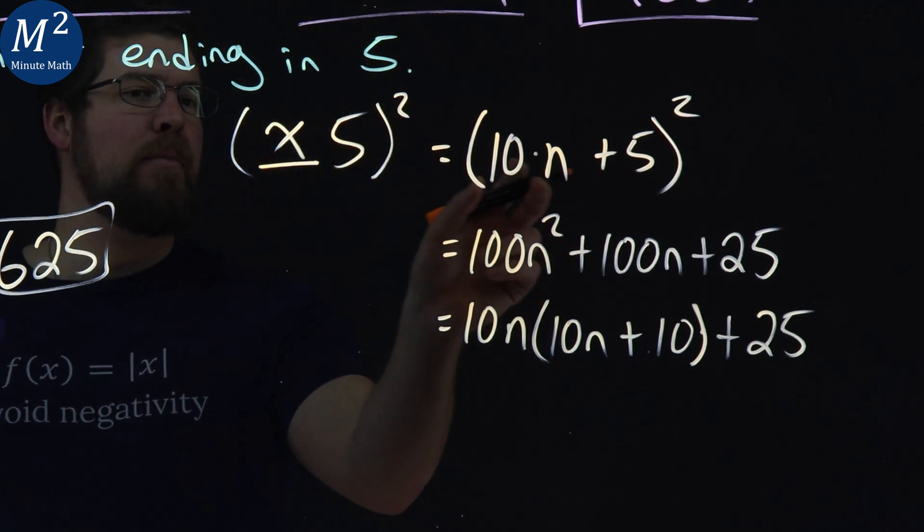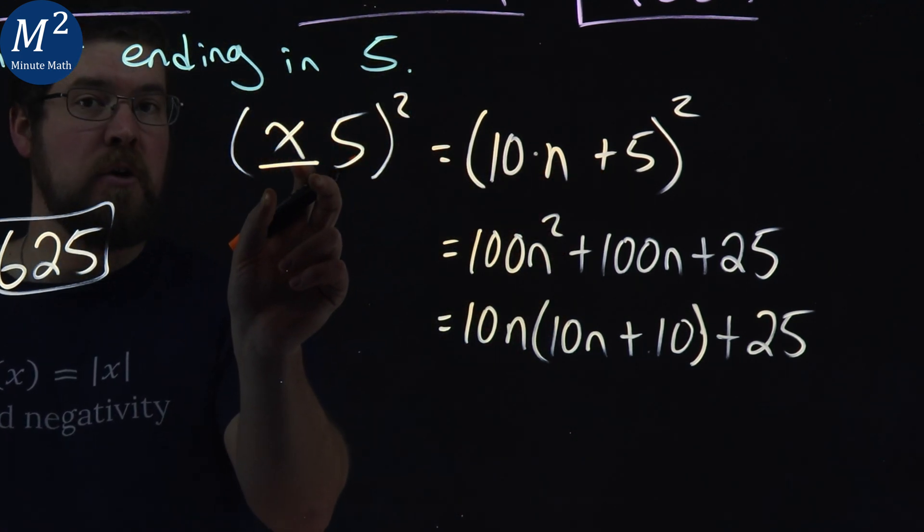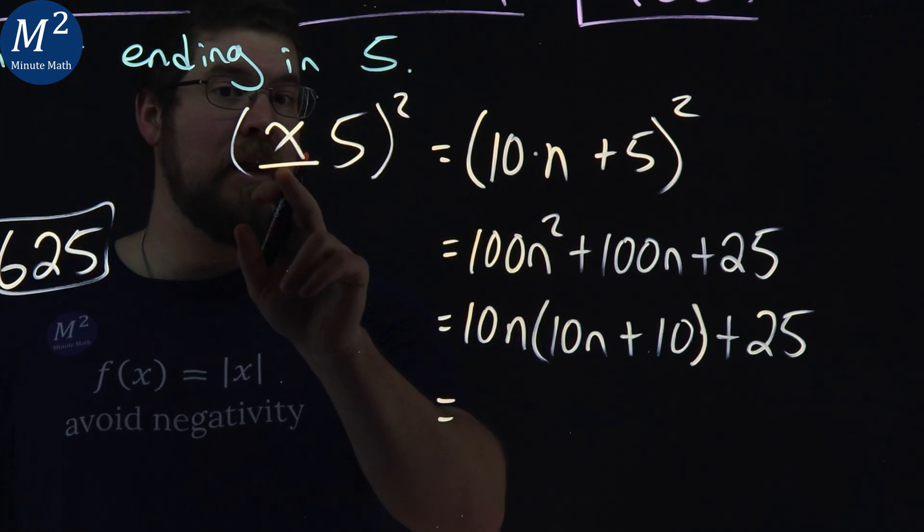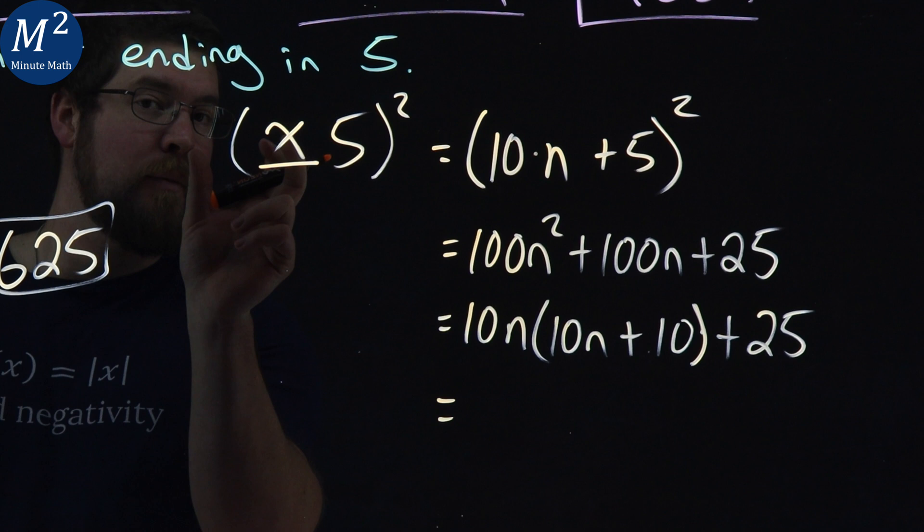Now notice we said that 10n represents whatever that x value is. So if we swap that back in, 10n represents whatever that x value is. Remember, we can have multiple digits here.